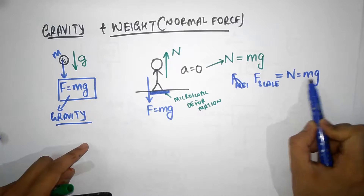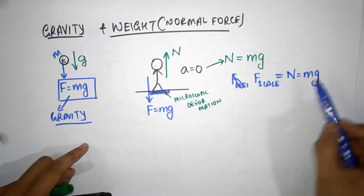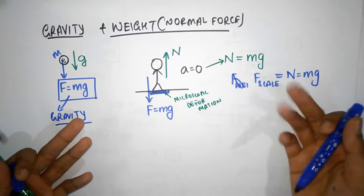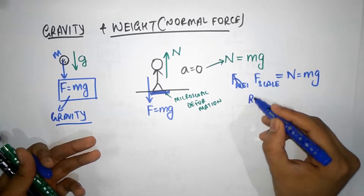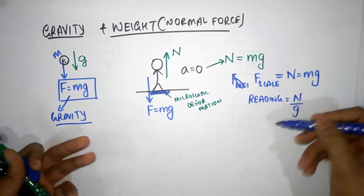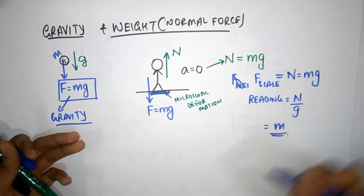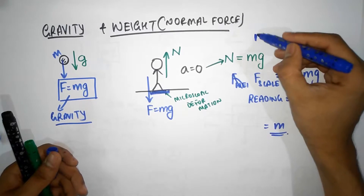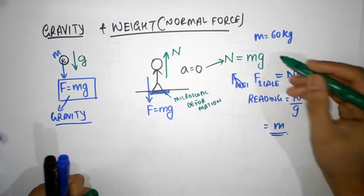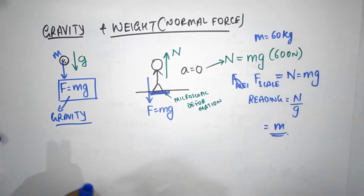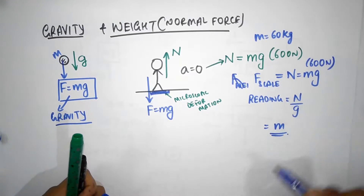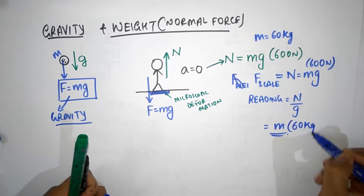Your weighing scale is not going to give you the output in Newtons, because mg is in Newtons. Instead, it's going to divide by g, because your weighing scale has this built-in thing: when it gives a reading, it divides by g. Therefore, the reading on the scale is just N divided by g, which is simply m. So, for example, if your mass was 60 kg, the normal force on you — provided your acceleration is zero — would be 600 N, and the force on the weighing scale would also be 600 N, and it would show you 60 kg.